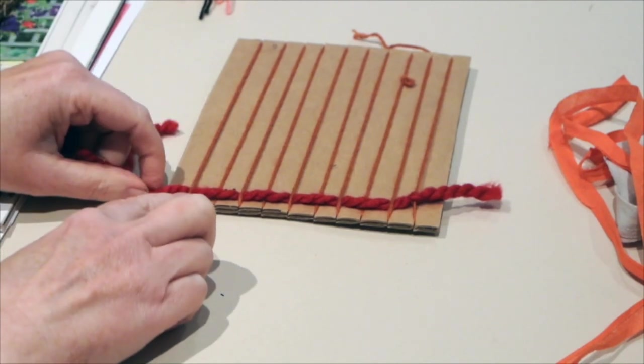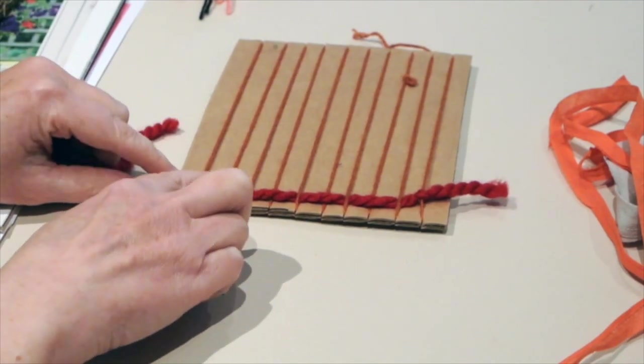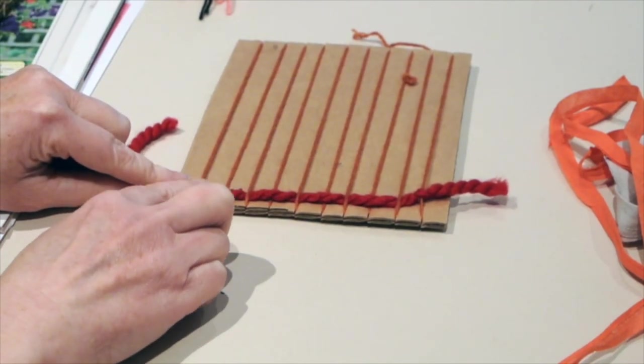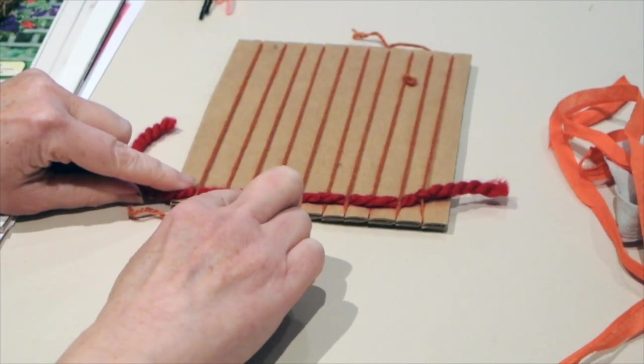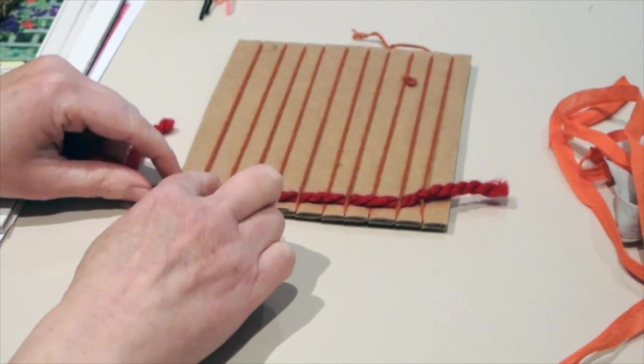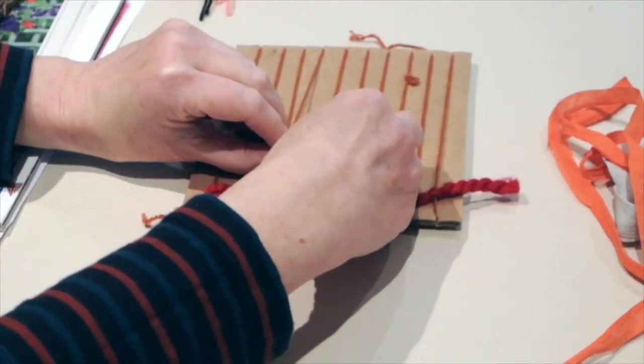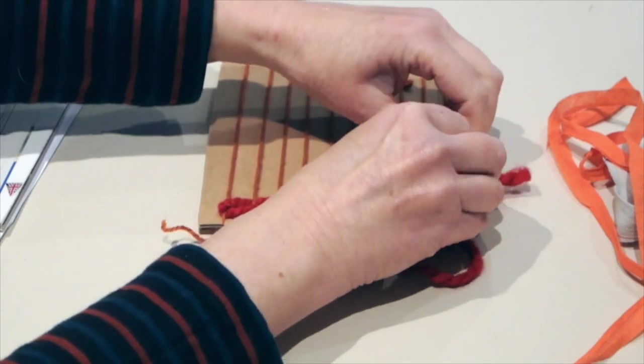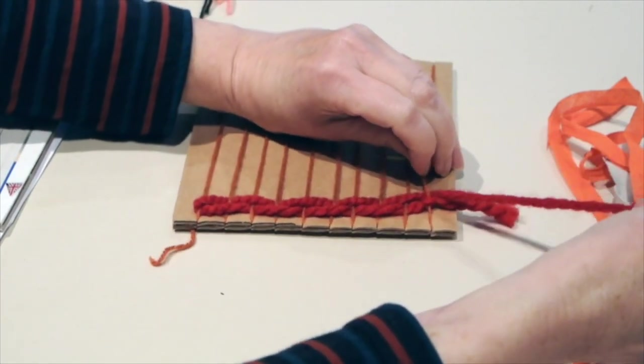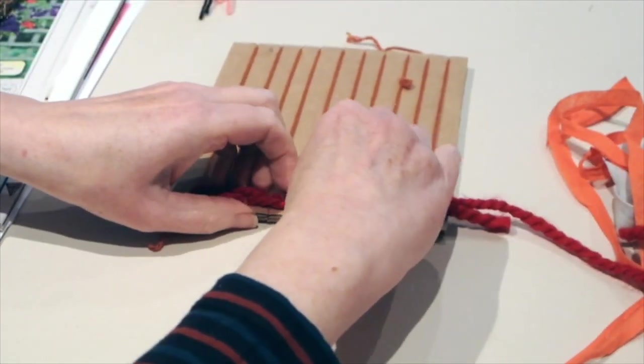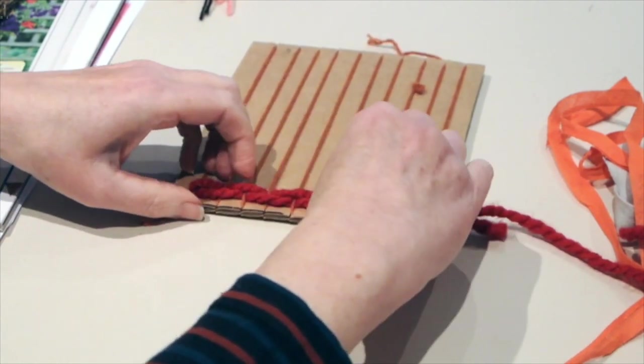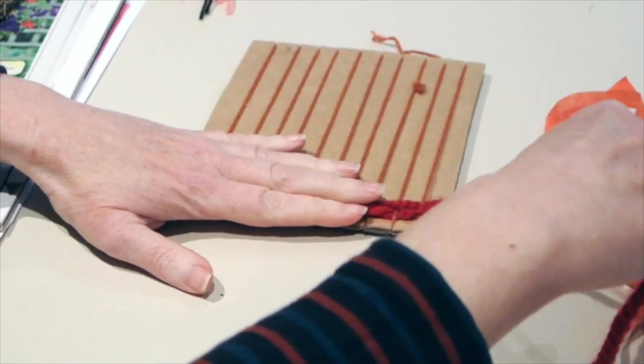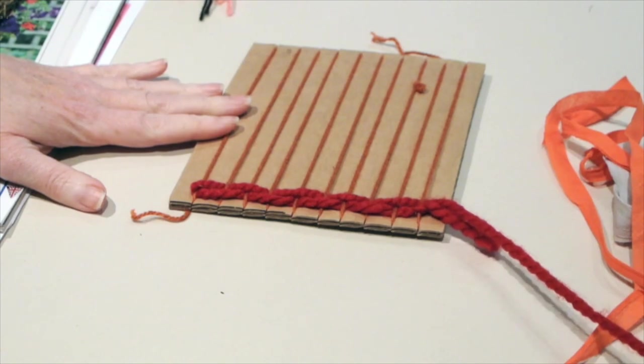If I've gone over a thread, on my second row I need to go under it. And if I've gone under a thread before, I need to go over it until I get to the other end. Then I'm just going to tuck them down together so I don't get any holes in my weaving.